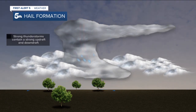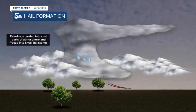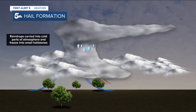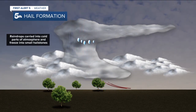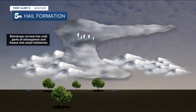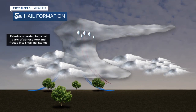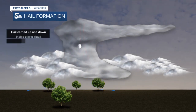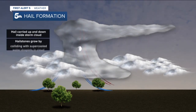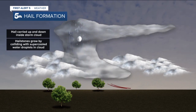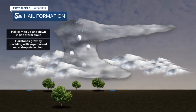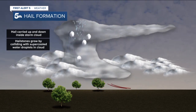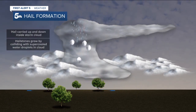Raindrops are lofted thousands of feet into the air where the temperature drops below 32 degrees and they freeze into tiny hailstones. Hail will bob up and down in the updraft and gather supercooled rain droplets and continue to grow.